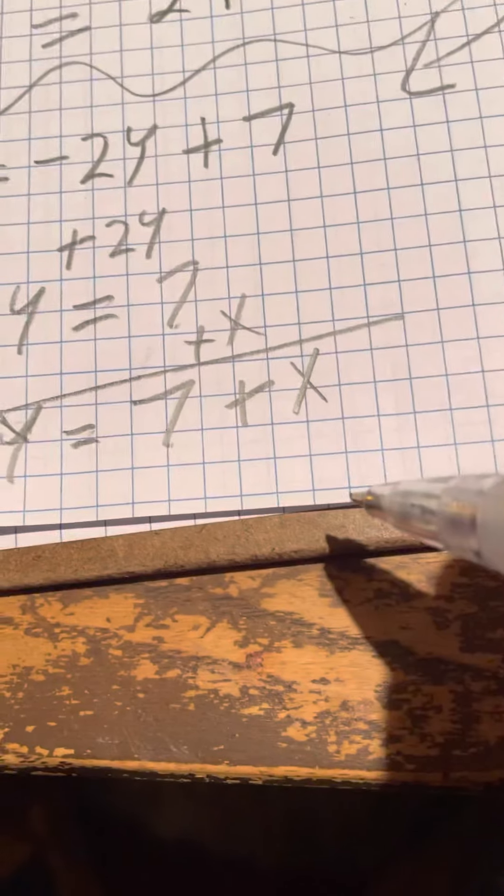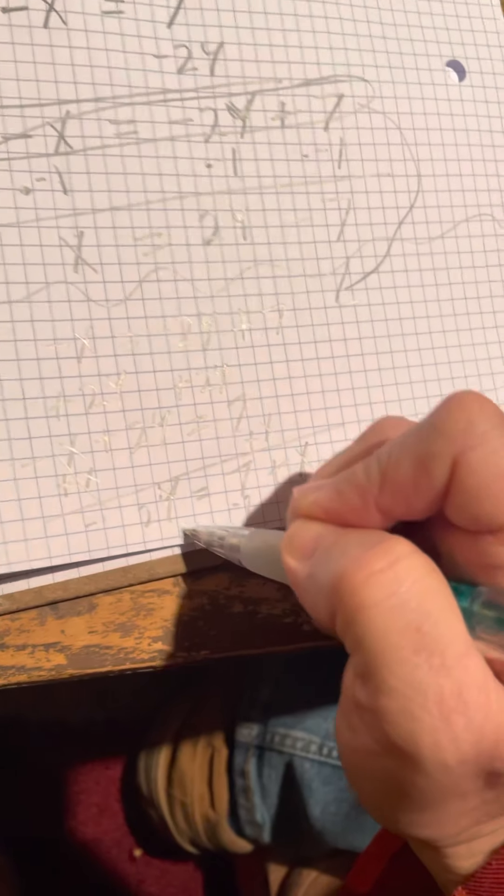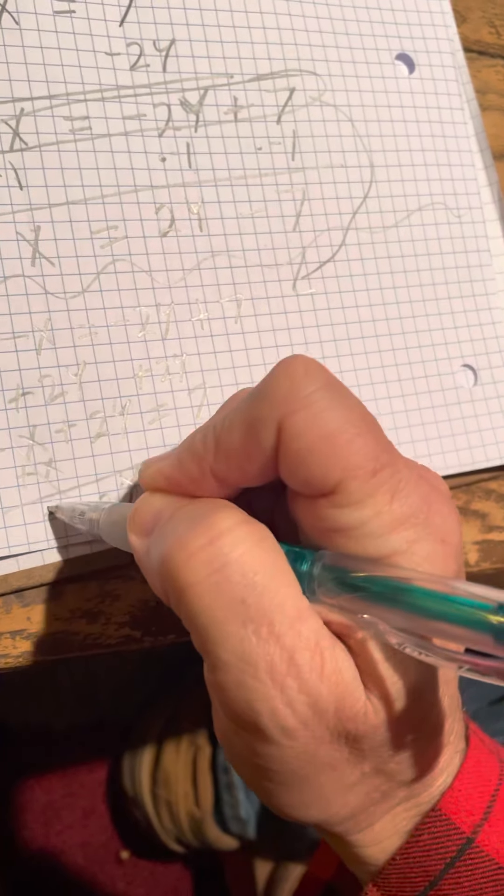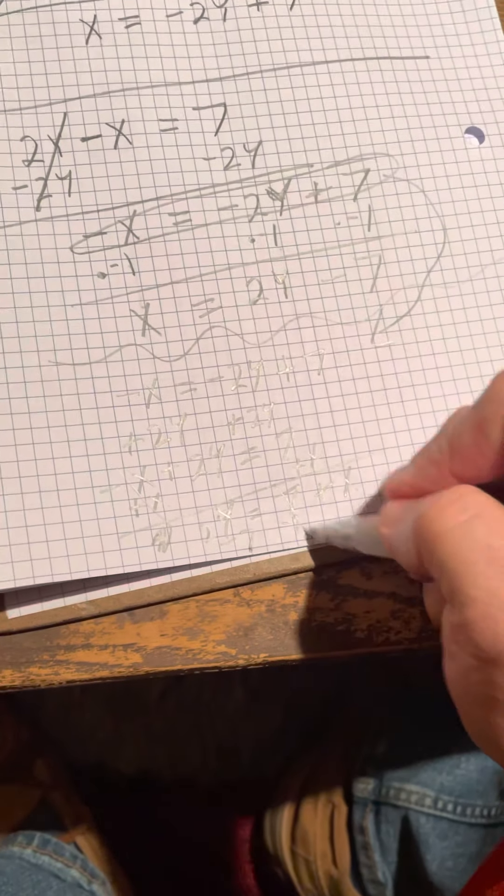Now x is almost by itself, but we have to subtract this 7 from both sides, and if I do that, these right here will cancel out.